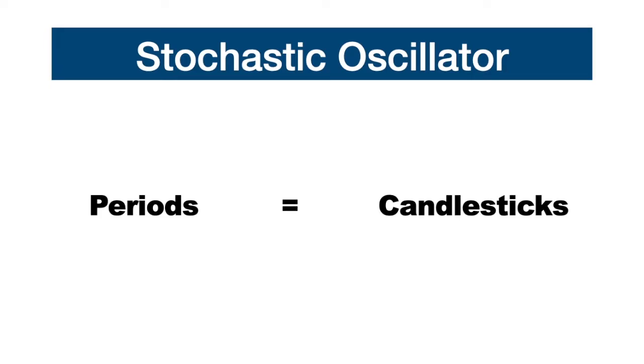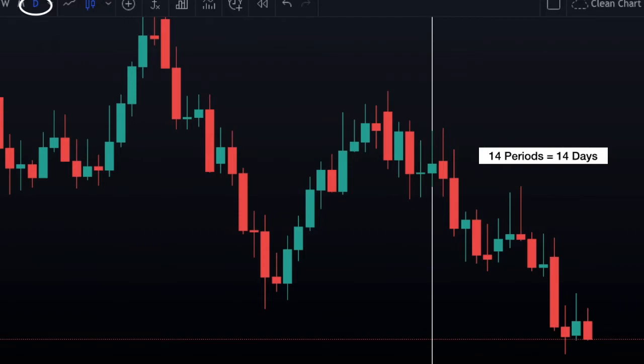The default stochastic period is 14 periods. This means that using the 1-day time frame, 14 periods are equivalent to 14 candles of a day, therefore 14 days.